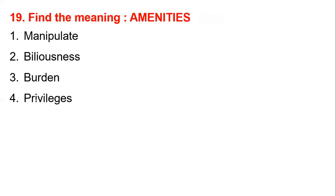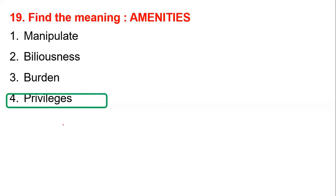Find the meaning of amenities. The options are: manipulate, billiousness, burden, privileges. Amenities means privileges — it is a good or comfortable thing, a facility. So privileges is the correct answer.